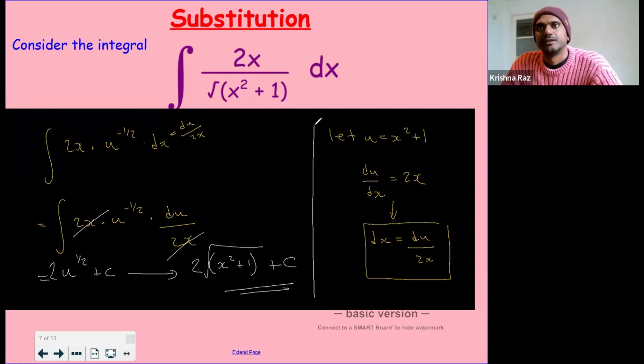So the key thing is, once we've made the substitution, we need to differentiate the variable, in this case u. So we get du by dx and rearrange it to make dx the subject so we can substitute back in.